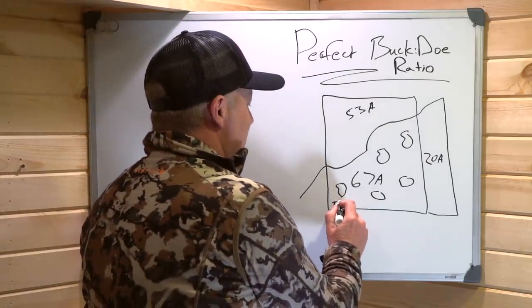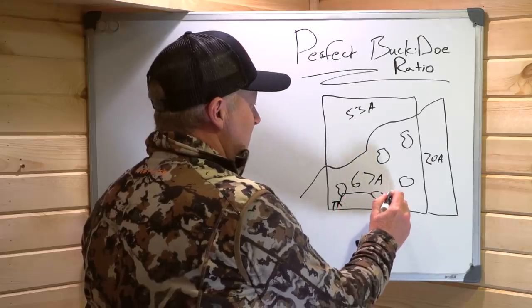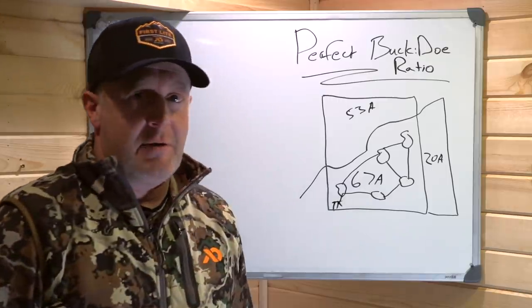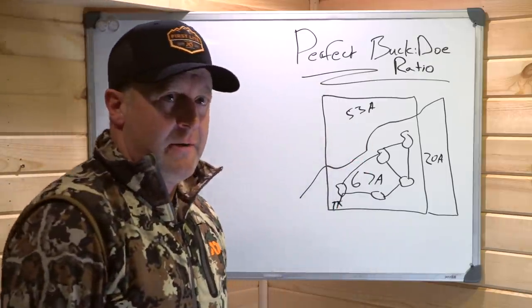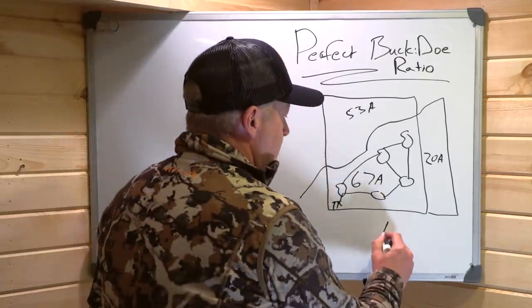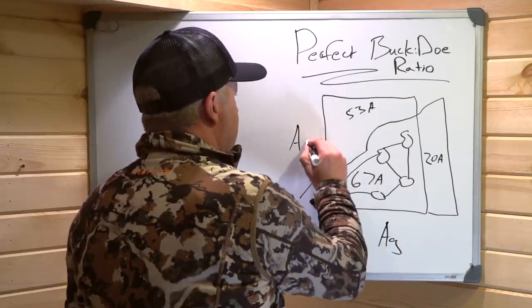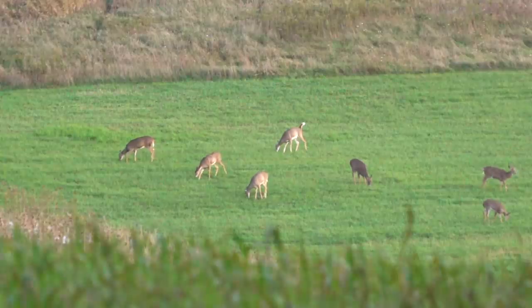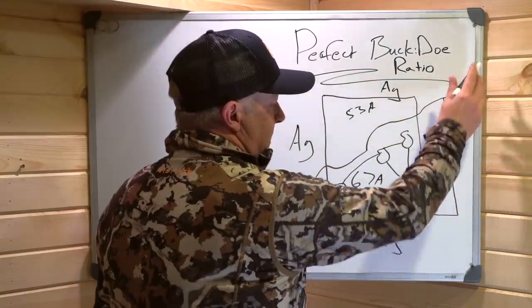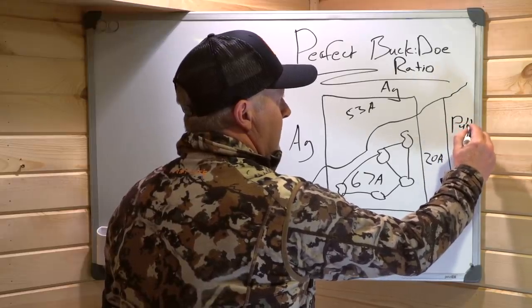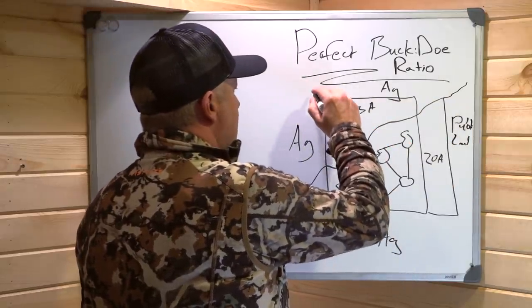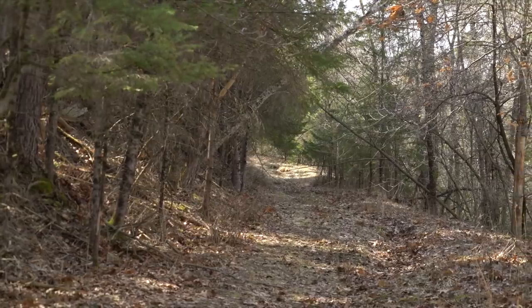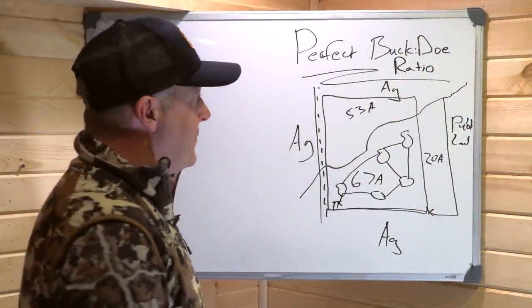On the 67-acre parcel, there are food plots everywhere. There's a cabin down here with an access road connecting all the food plots, so you can go from one to the other — easy to get around the property. The 53-acre parcel has ag all the way around it, high deer density. The 20-acre parcel is next to that river extending up with public land beyond it, fairly remote, accessed by an easement from the main road on the west side.